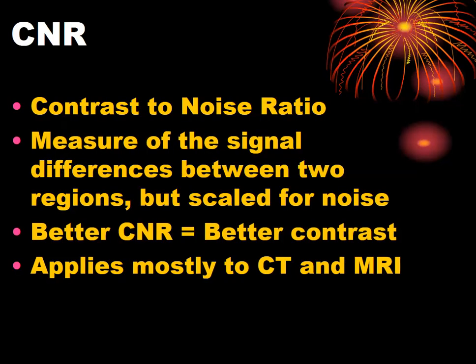CNR — contrast to noise ratio — measures the difference between adjacent areas of the x-ray, such as light and dark regions, while controlling for noise. If you have noise on your x-ray, that compromises your contrast. Better CNR equals better contrast. This applies mostly to CT and MRI, but also to flat radiography. Noise sources for CNR include scatter and quantum mottle.